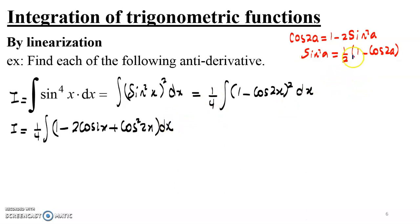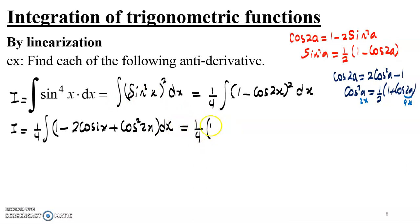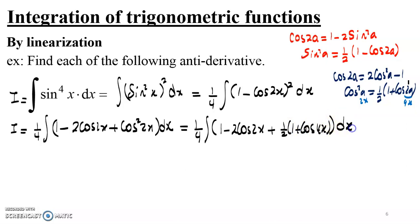For cosine squared, we use cosine 2a equals 2 cosine squared a minus 1, solving for cosine squared a to get half times (1 plus cosine 2a). Here cosine squared of 2x means a equals 2x, so 2a equals 4x. Substituting back gives one quarter times the integral of 1 minus 2 cosine 2x plus half times (1 plus cosine 4x), all times dx.